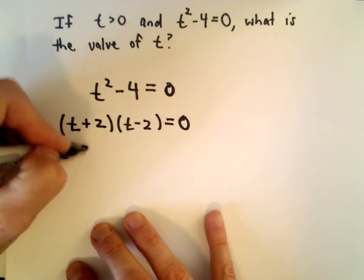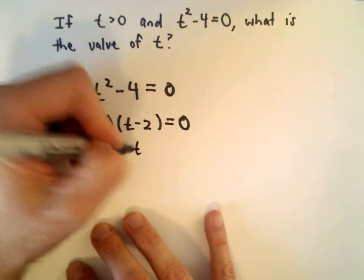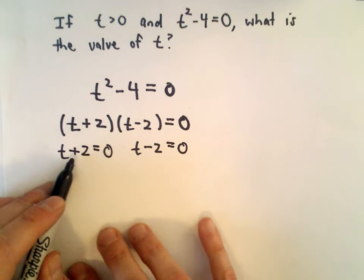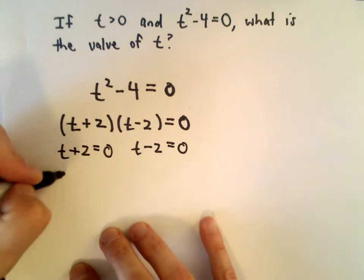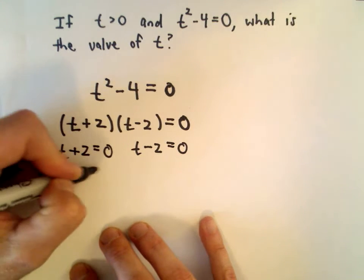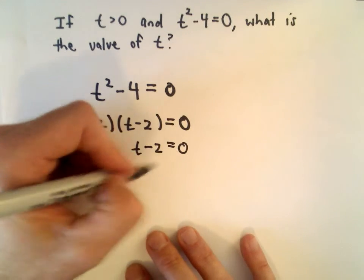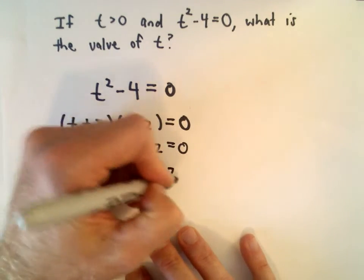If I set each factor equal to 0 and solve, I'll get my two values. I'll take t plus 2, set it equal to 0, subtract 2 from both sides, and get t equals negative 2 as one solution. T minus 2 equals 0, add 2 to both sides, and get t equals positive 2.